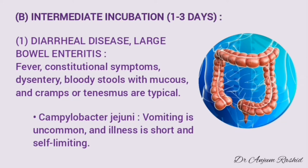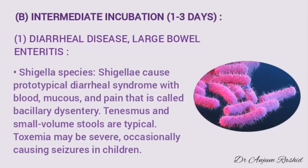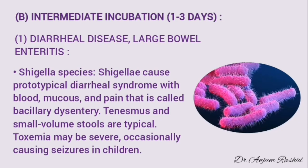The first organism is Campylobacter jejuni. In this, vomiting is uncommon and the illness is short and self-limiting. The second important organism producing diarrheal disease due to large bowel enteritis is Shigella species. Shigella causes prototypical diarrheal syndrome with blood, mucus, and pain — this is called bacillary dysentery. Tenesmus and small-volume stools are typical. Toxemia may be severe and occasionally seizures may be present, especially in children.